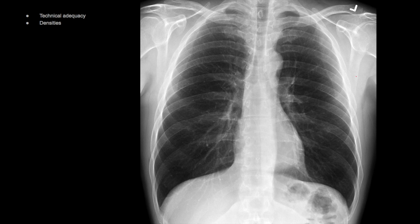Now that we've talked about technical adequacy, let's talk about different densities. The density of air is the lowest, and therefore it shows up black on an x-ray film, such as within the lungs — it's the blackest part of the x-ray film. The next highest density is fat; this is a good example of pericardial fat, which has its own shade of gray. Next we have fluid and soft tissue, such as muscle — a prime example is the heart. You cannot easily differentiate soft tissue from fluid on a radiograph, which is why we use upright and semi-recumbent views when we want to see fluid levels — fluid will have a flat line to it.